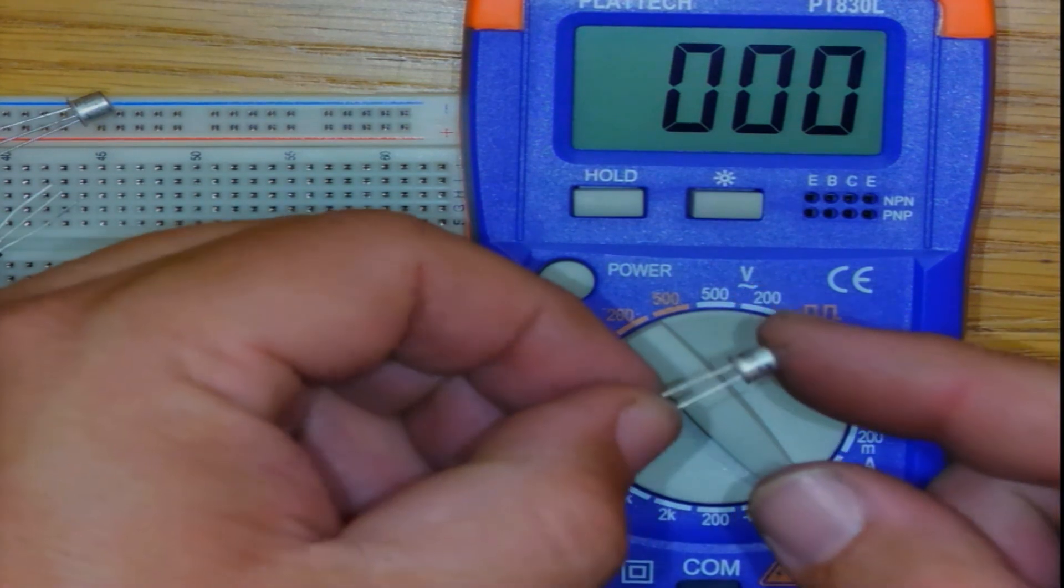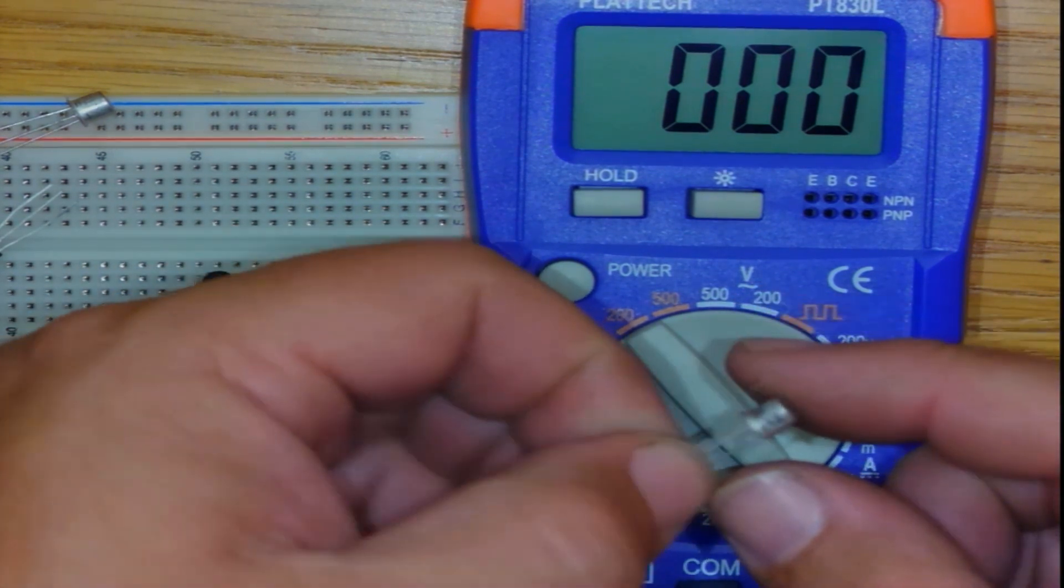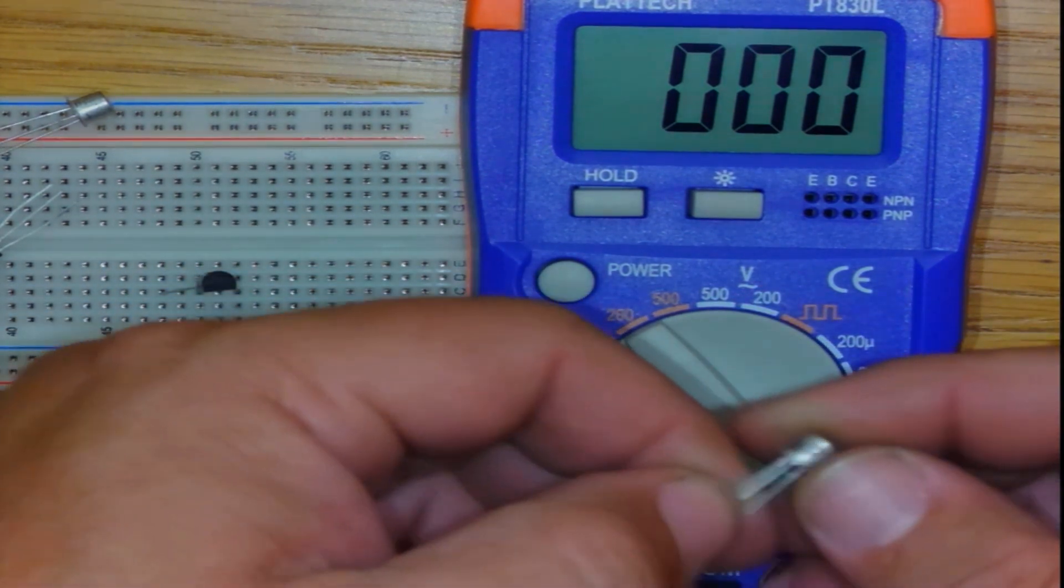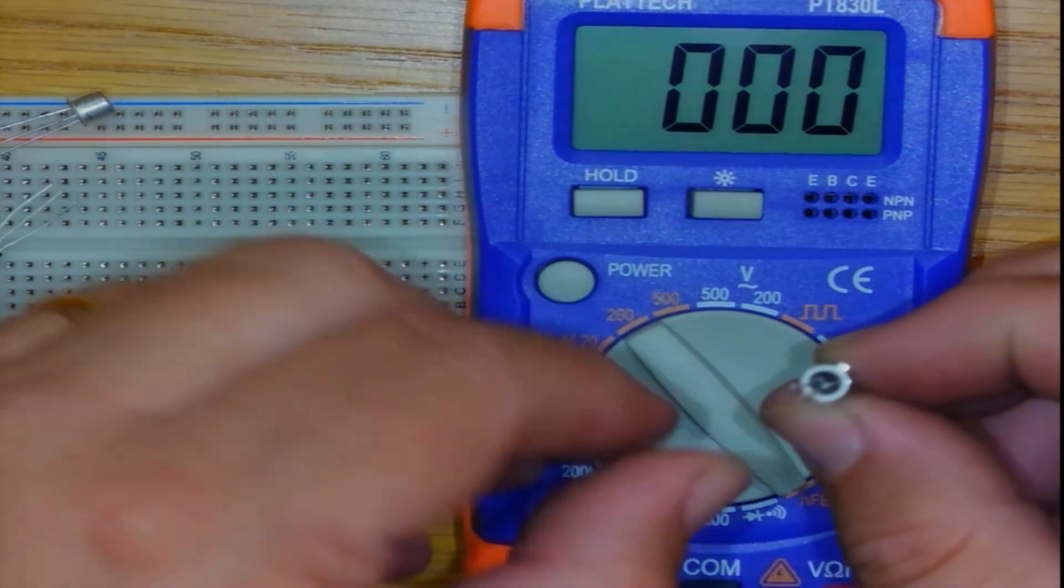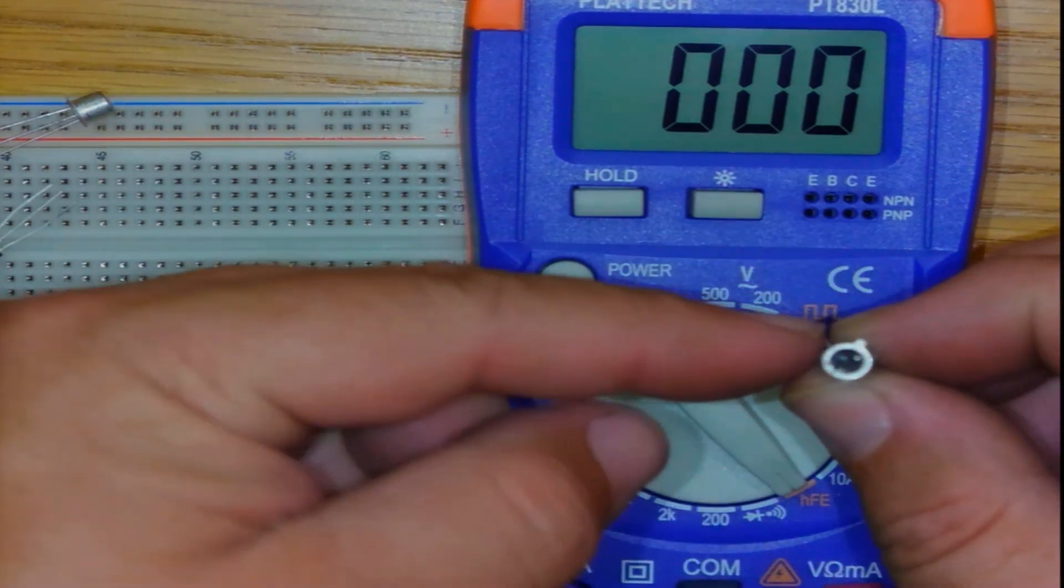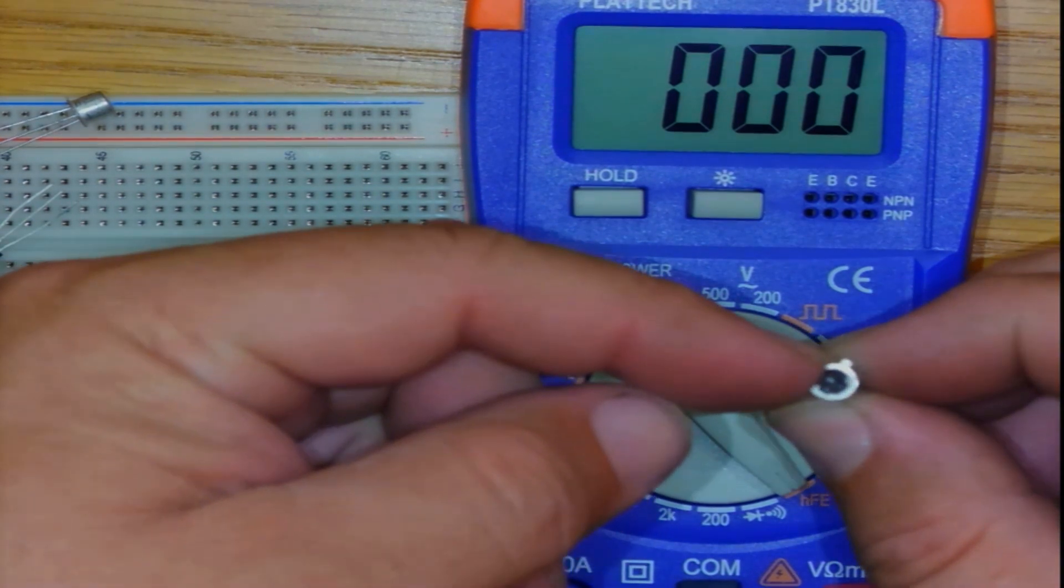All right. The metal can, the TO92 body, we can do the same. Now, the metal can is more convenient than the black body, because it's got a little index on the one side.